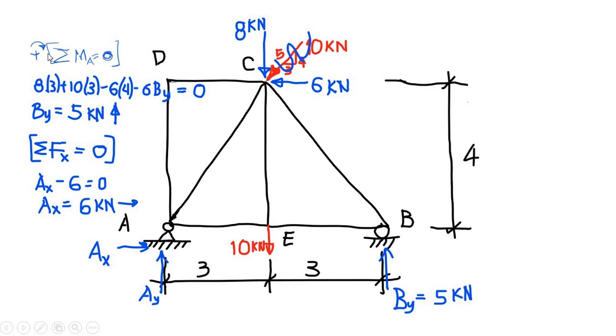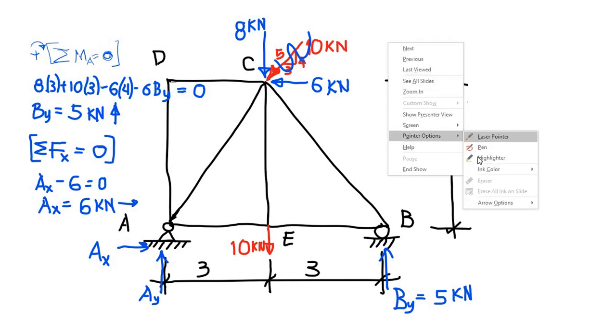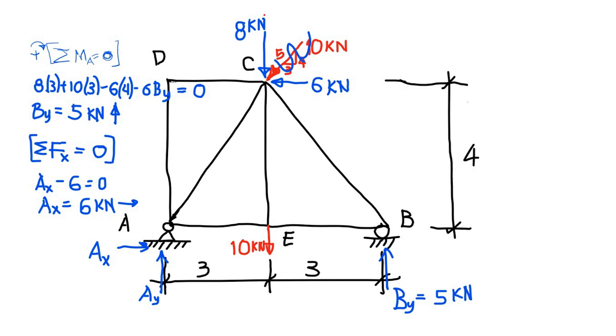We take the clockwise direction as positive when we sum moment about point A. We have 8 times the distance is 3, so 8 times 3. We first take all the vertical components, then 10 times 3, the distance is 3 from point A.